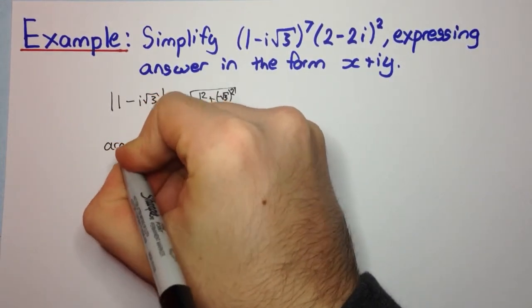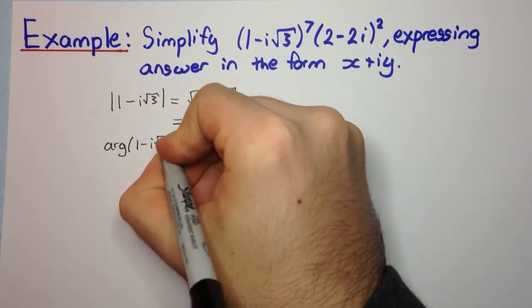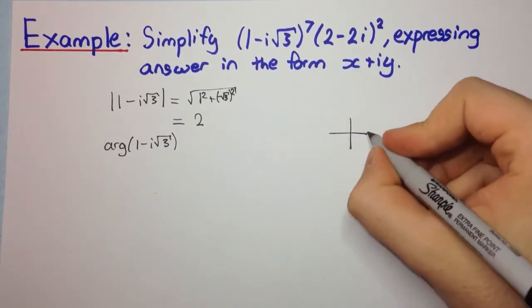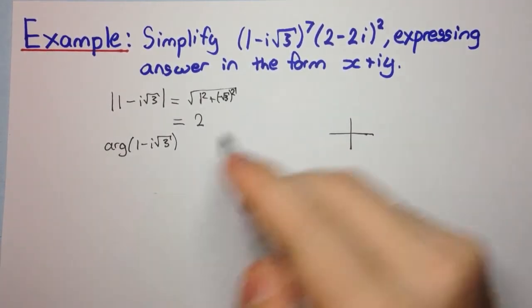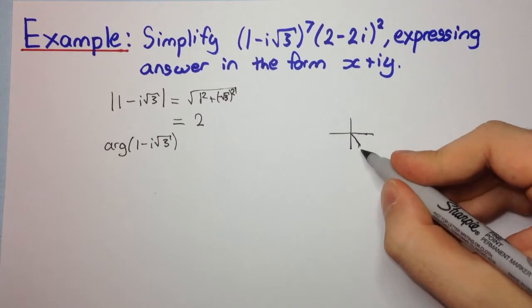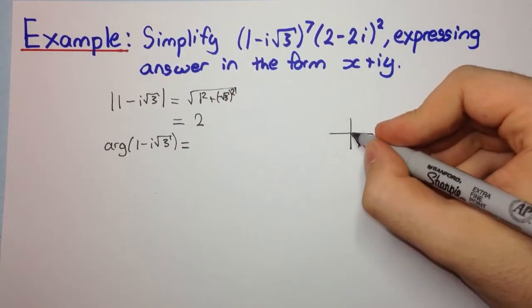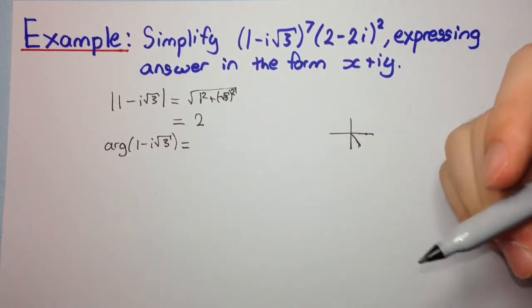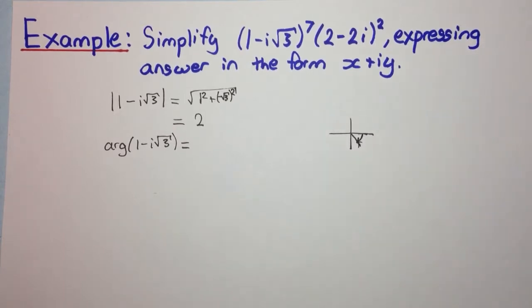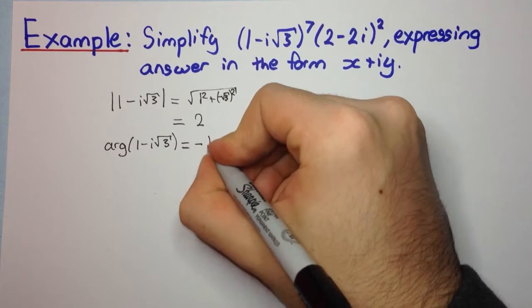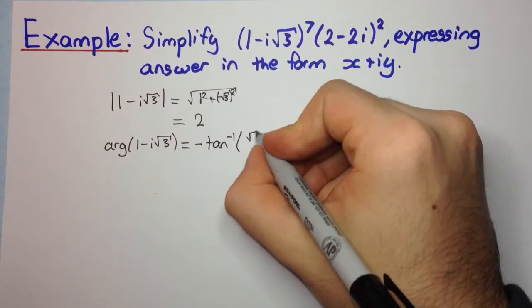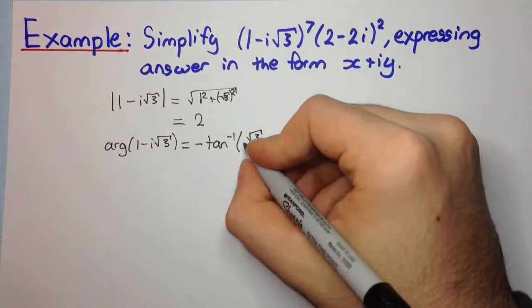Now let's have a look at the argument. 1 - i√3. So remember, let's have a look where this lies on the Argand diagram. So we're going across 1 and down i√3. So it's in the fourth quadrant. So the way we do it, we're going to work out the tan inverse of the imaginary part over the real part, but it's going to be minus because we're now going down, not up. So it's going to be minus tan inverse of the absolute value of the imaginary part, which is √3, over the absolute value of the real part, which is 1.